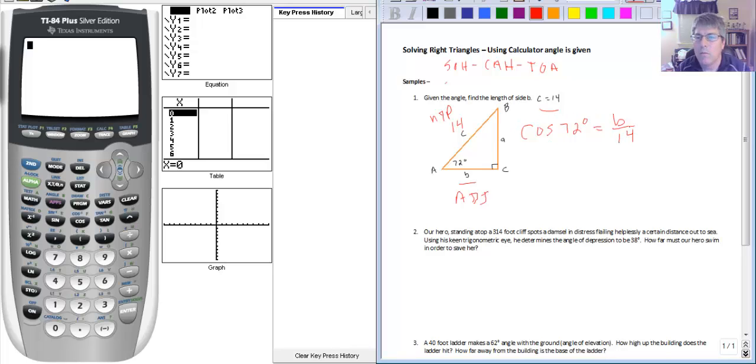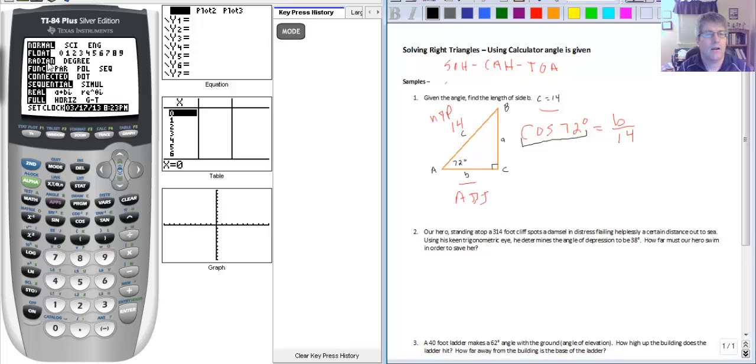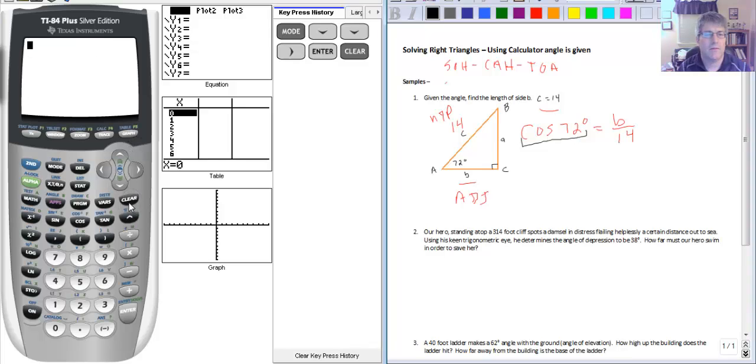But we want to solve for B. Well, hopefully we know that the cosine of 72 is some ratio. This really is a proportion. The cosine of 72 is going to be some fraction equals B over 14. But we don't know what that proportion is, but our calculator does. Now, the calculator will give this to us as a decimal. And we are working in degrees. So before we use our calculator, we need to make sure our calculator is in degree mode. And you can see here, I've got degree is not highlighted. Radian is. So we want to cursor down and select degree and get our calculator in degree mode.